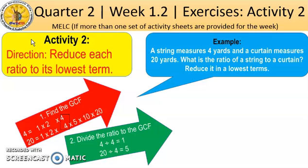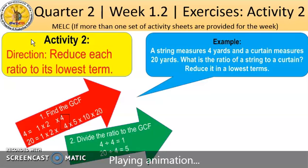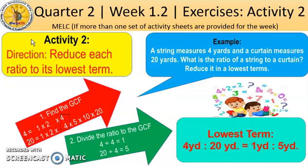Next, let us divide the ratio by the greatest common factor, which is 4. 4 divided by 4 equals 1, and 20 divided by 4 equals 5. So the lowest term for 4 is to 20 is 1 is to 5, or 1 yard is to 5 yards.